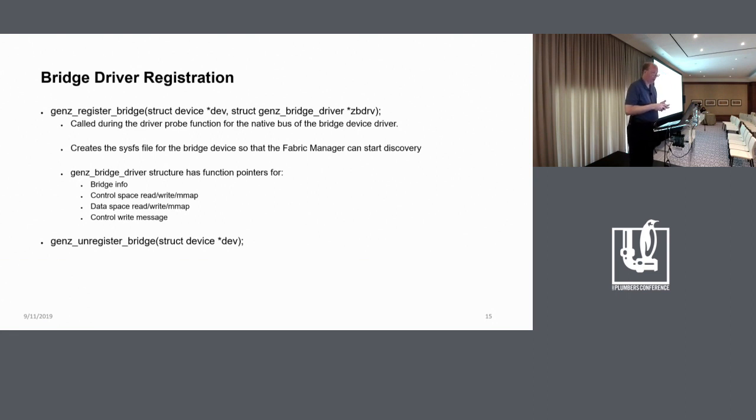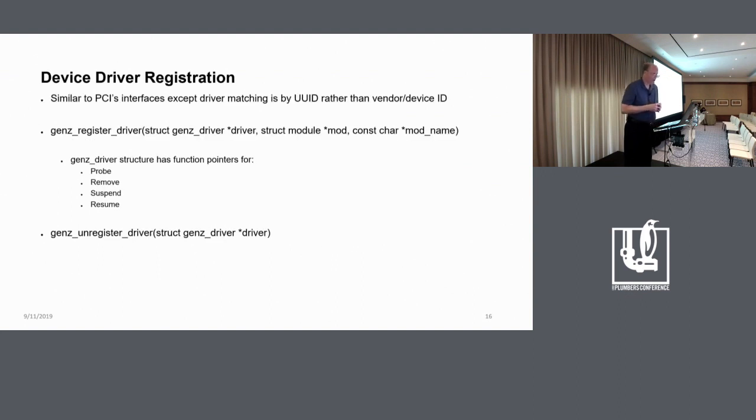And that'll happen usually during the probe function of that native bridge driver. And when the subsystem finds such a bridge, it will be presented two things. One is the native device pointer for that device on its native bus, as well as a pointer to a structure, which has got a bunch of function pointers in it. And those function pointers will include callbacks into the bridge driver to let it return bridge information or perform control space reads or writes or maps or data space reads or writes. Or control write message, which is a packet I haven't really talked about, but it's used to talk to other management entities out on the fabric. And then, of course, there's an unregistered which corresponds.